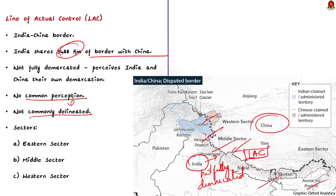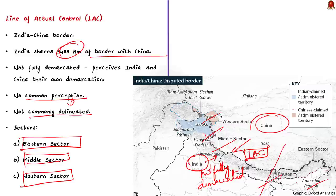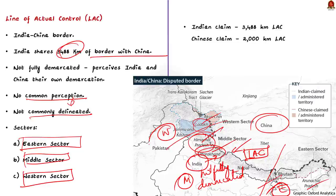Since there is no common perception of the entire LAC, it is not a commonly delineated border. The bordering areas are divided into three sectors: the eastern sector comprising Arunachal Pradesh and Sikkim; the middle sector comprising Uttarakhand and Himachal Pradesh; and the western sector which includes the Ladakh region. India considers the LAC to be 3,488 km long, but the Chinese side considers it to be only around 2,000 km.